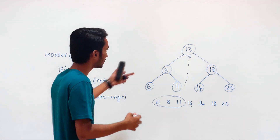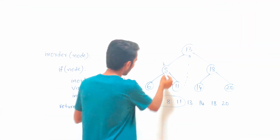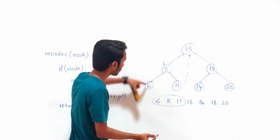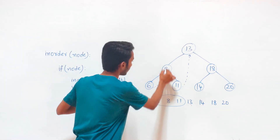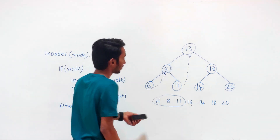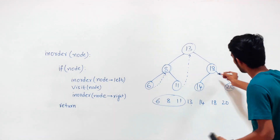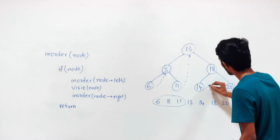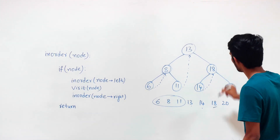This is how Morris in-order traversal works. For example, if you are at root node 8, after visiting 6 we need to get back to 8. Before giving control to 6, we link the predecessor of 8 — which is 6 — back to 8. Similarly, if you are at node 18, before giving control to 14, we link the predecessor of 18, which is 14, back to 18.